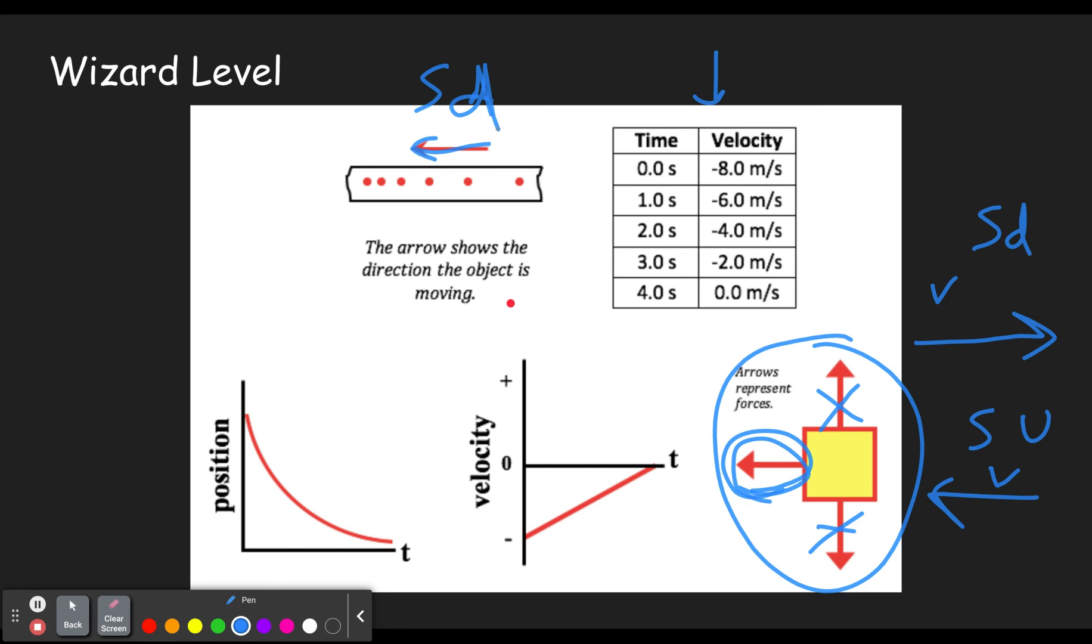So our velocities are negative. So that means it's going to the left and this is slowing down as well. Well, perhaps our free body diagram is incorrect. This is going to the left because it's got a negative velocity and it's slowing down.